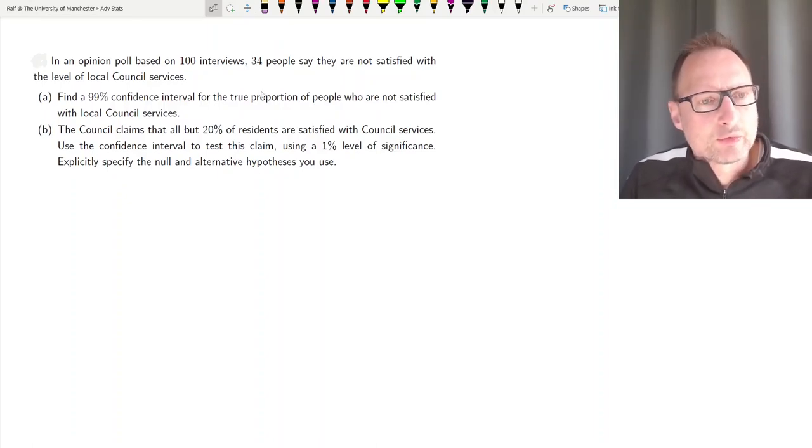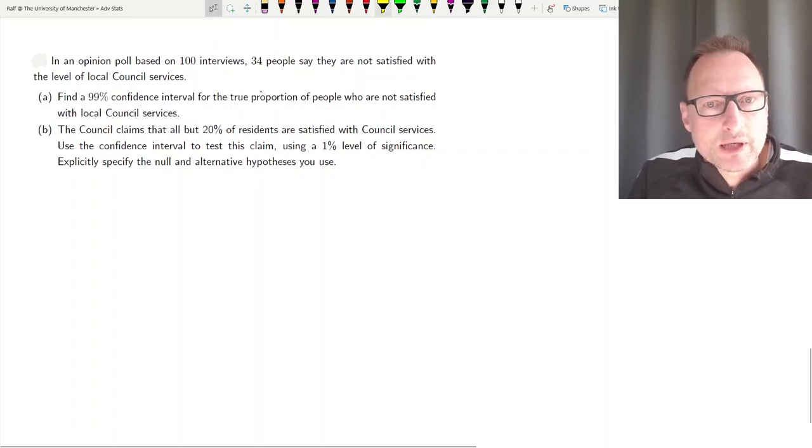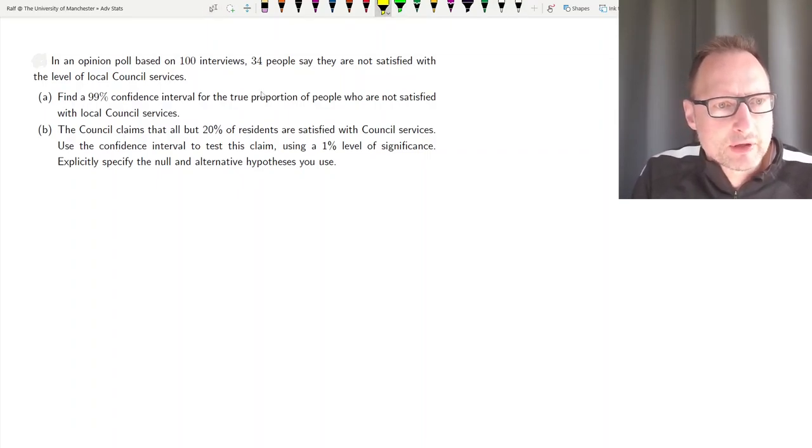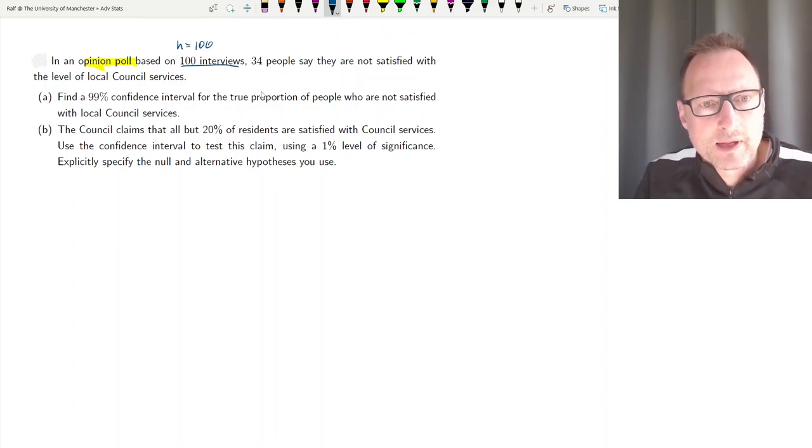Here we have a question which will ask us to perform a confidence interval calculation and then also a hypothesis test calculation based on the same sample. We're having an opinion poll based on 100 interviewees, so n equals 100. In here we know that 34 people say that they are satisfied with the level of the local council services.